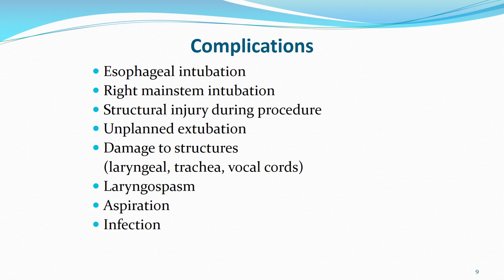There are several complications to be aware of with intubation. Esophageal intubation — where the physician misses the trachea and enters the stomach — should ideally be caught immediately by listening to the stomach. Right main stem intubation occurs when the tube is pushed too far and slides into the right main stem bronchus. Because intubation can happen during stressful and traumatic situations, aggressive technique can lead to structural injury including damage to the trachea and vocal cords, and even breaking of teeth.